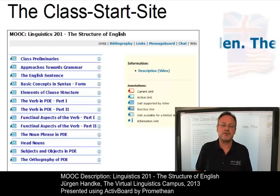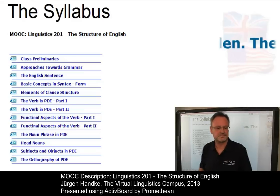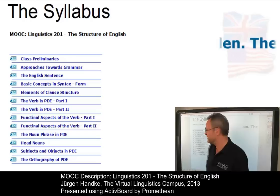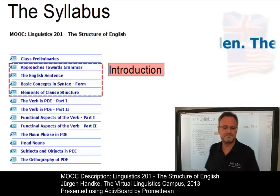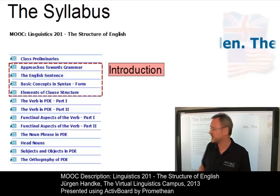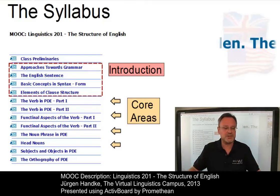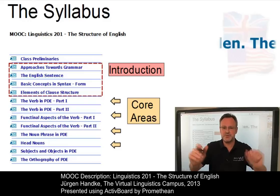Let us now look at the content of the class — traditionally referred to as the class syllabus. The class is subdivided into three parts. After an overview of the main principles of grammar and the analysis of English sentences with its main categories and functions, we will discuss the central syntactic categories and functions of present-day English in detail. That is, we will look at verbs and nouns, their integration into phrasal categories and their use within elements of clause structure. These units constitute the core of the class.